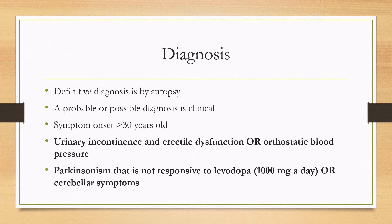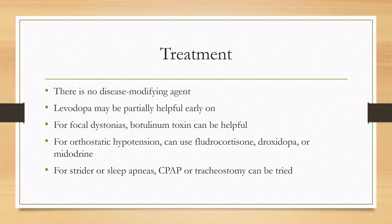For diagnosis, a definitive diagnosis is arrived at only by autopsy. However, a clinical diagnosis can be given in life that can be either probable or possible. Generally, symptom onset has to be in someone greater than 30 years old, there has to be either urinary incontinence and erectile dysfunction or orthostatic blood pressure changes, and there also needs to be either Parkinsonism that is not responsive to levodopa or cerebellar symptoms.